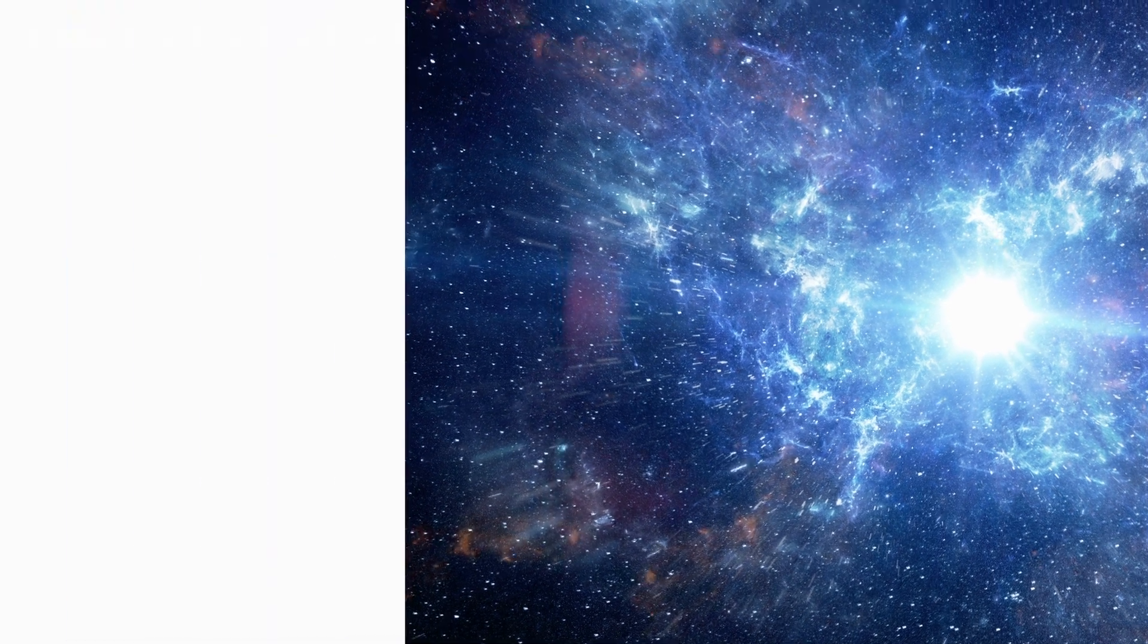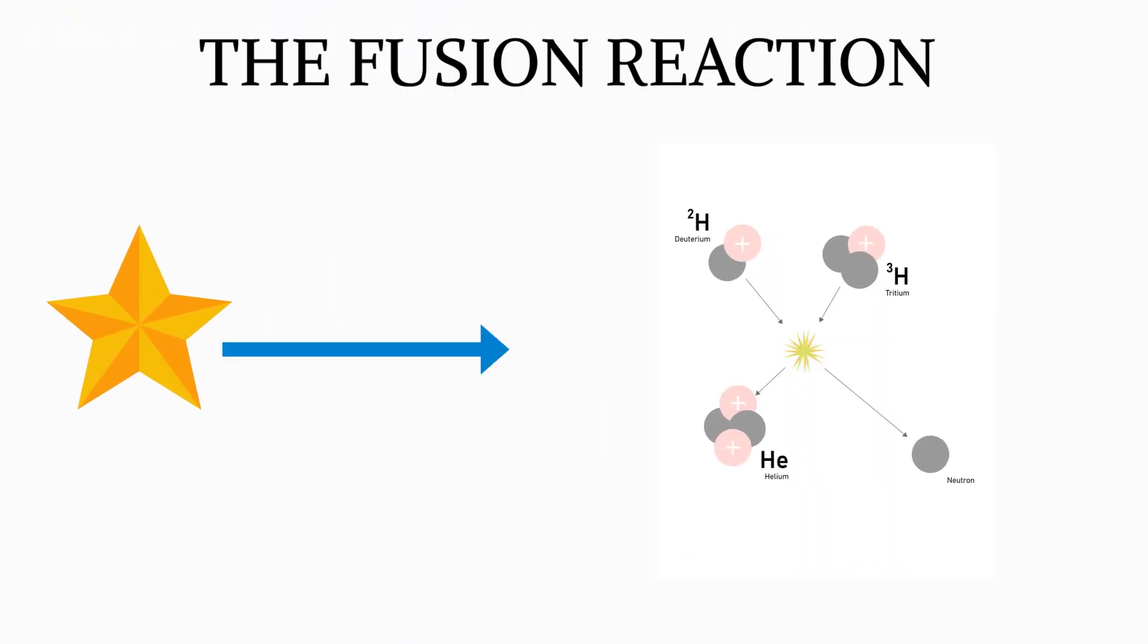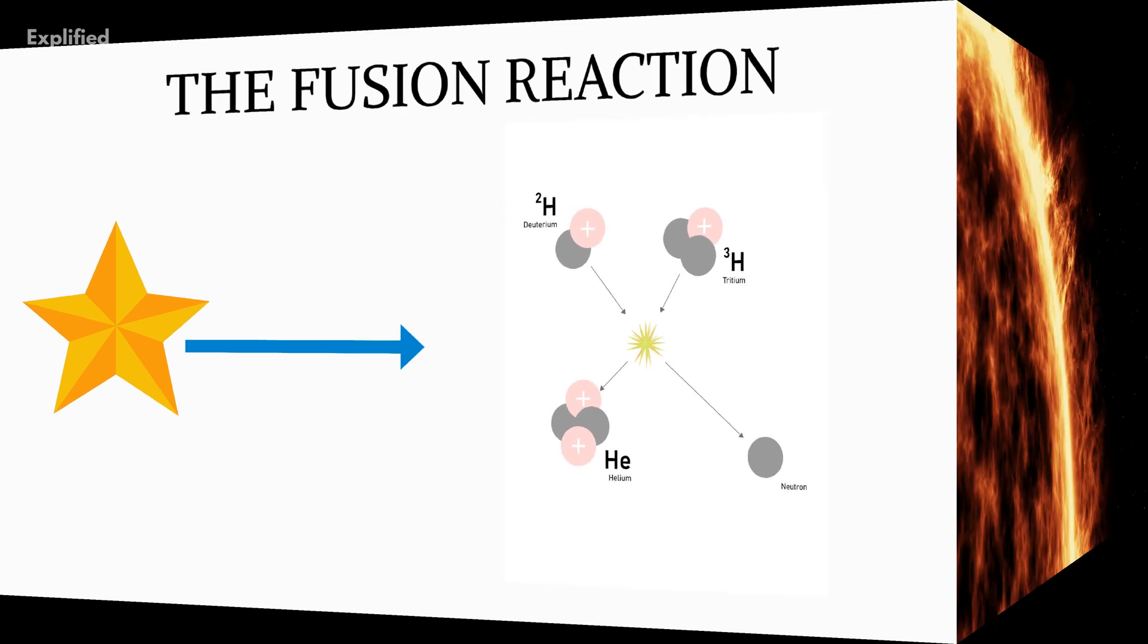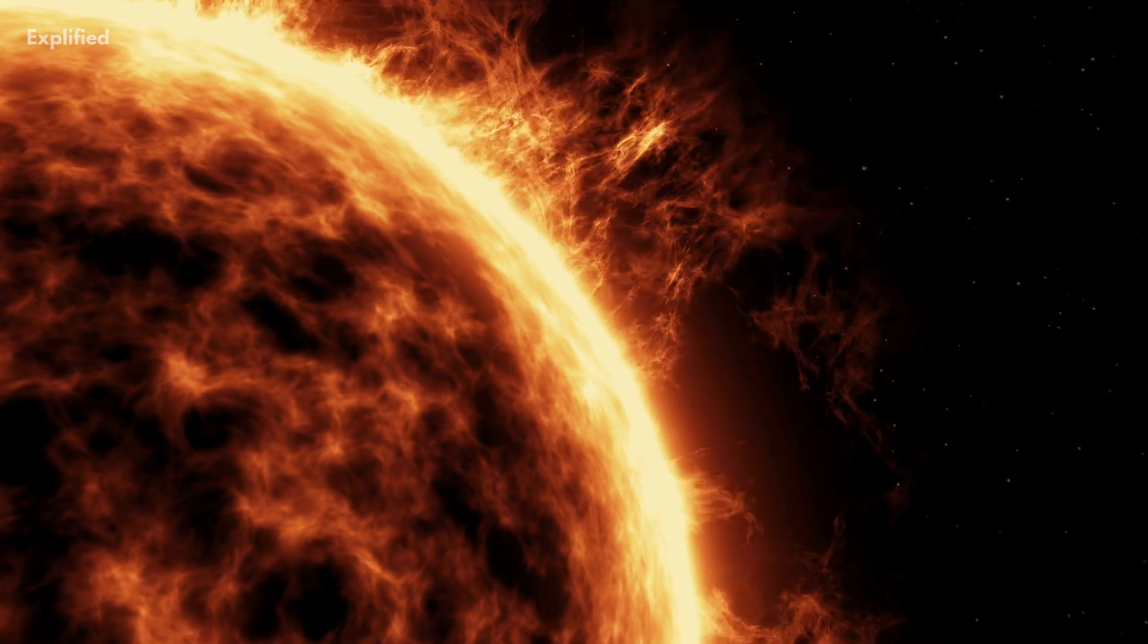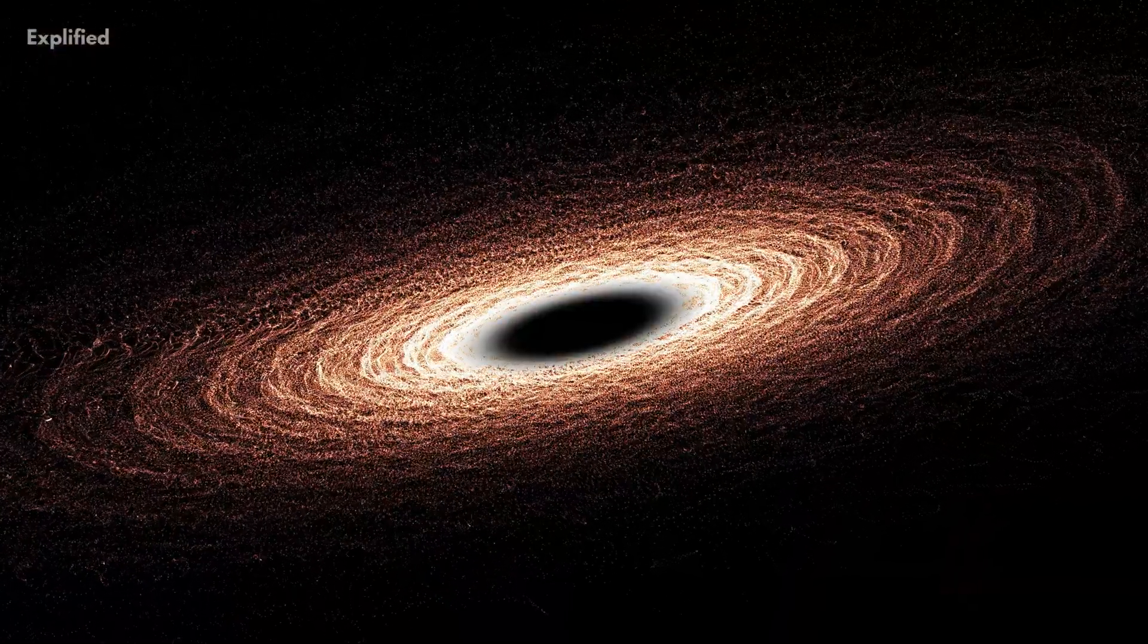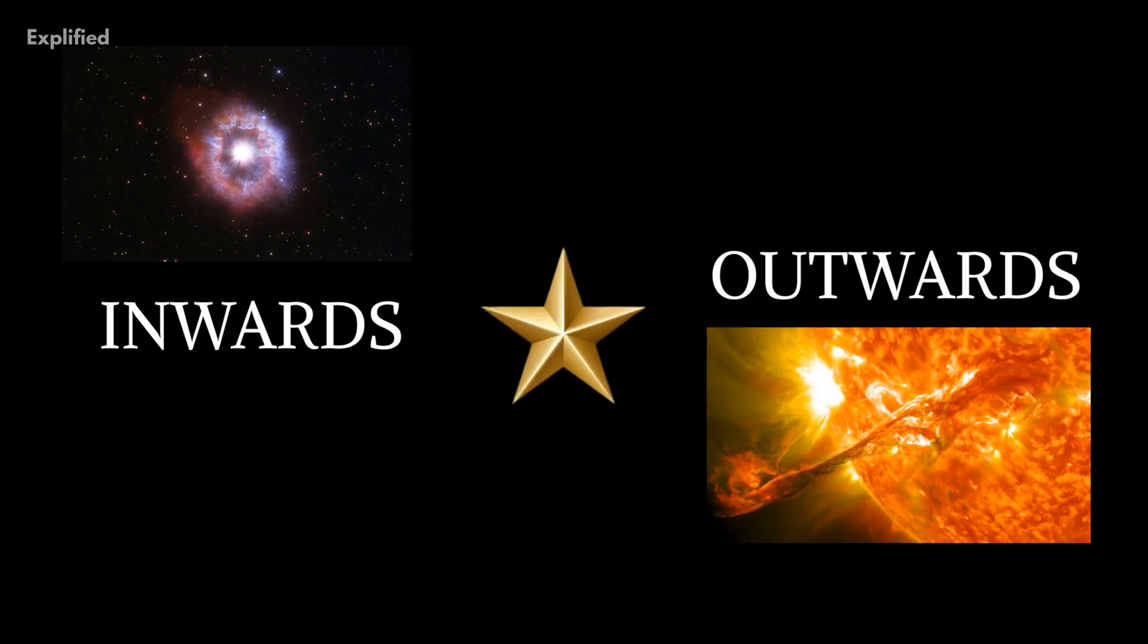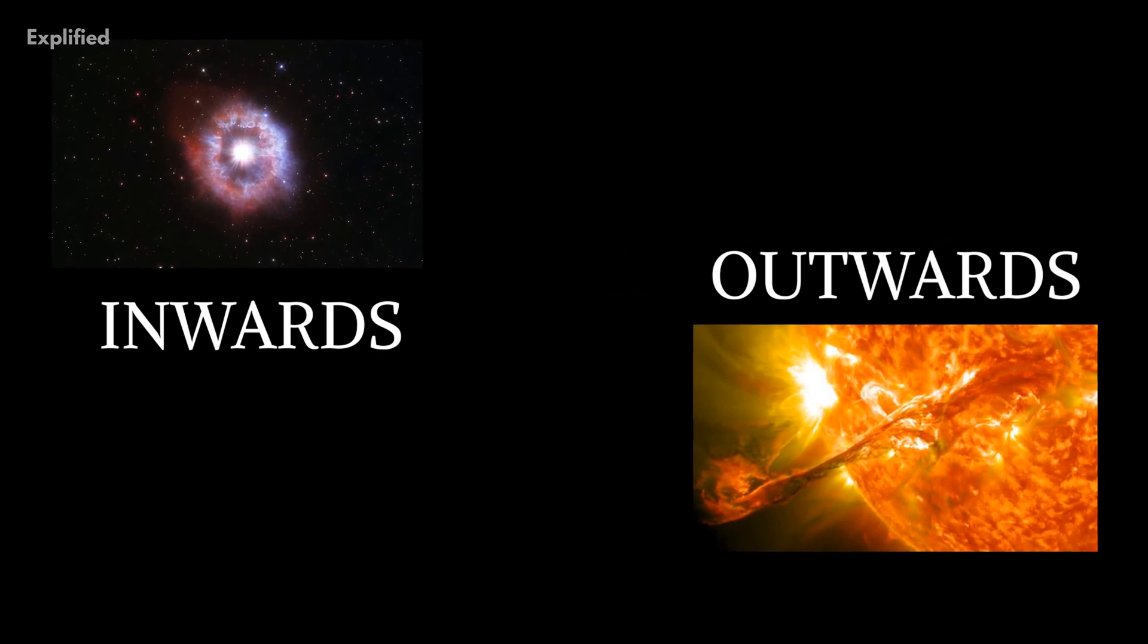We know that stars constantly burn hydrogen in the fusion reaction which makes helium. This generates energy that pushes outwards. The gravity from the mass of the star pushes inwards. The interaction of these two forces creates a balance that is important for the survival of the star. The beginning of the death of a star is marked by an imbalance between these two forces.